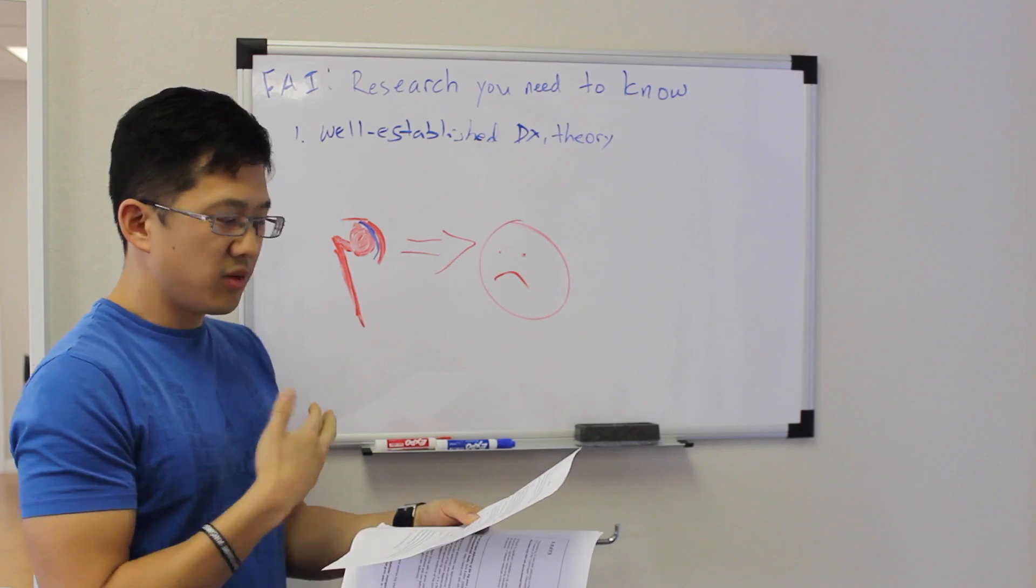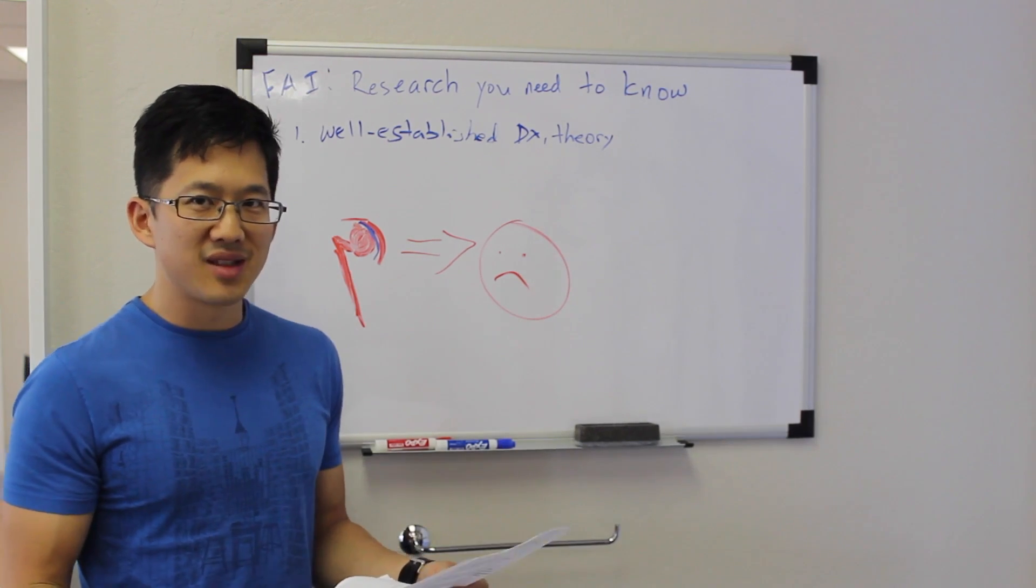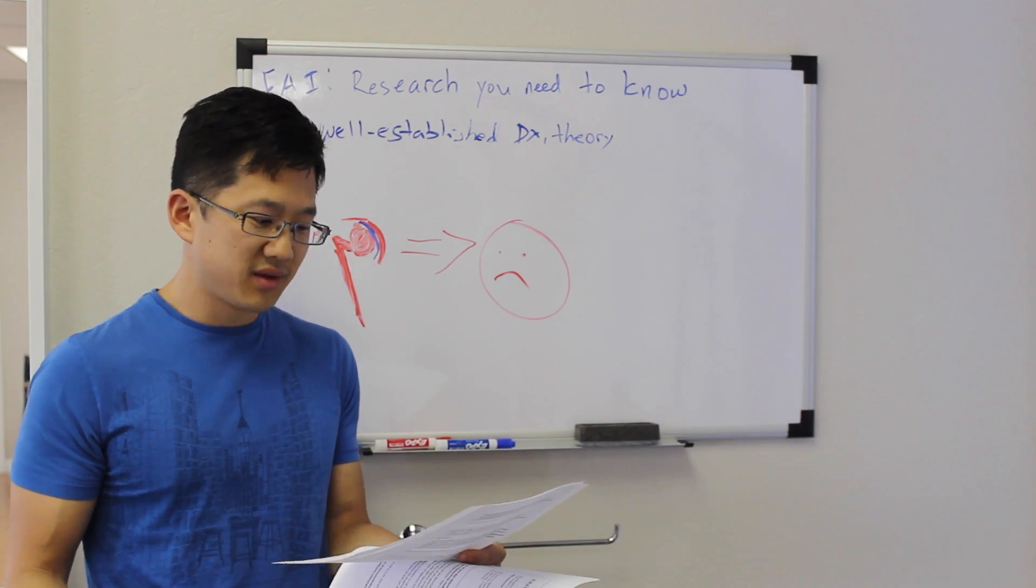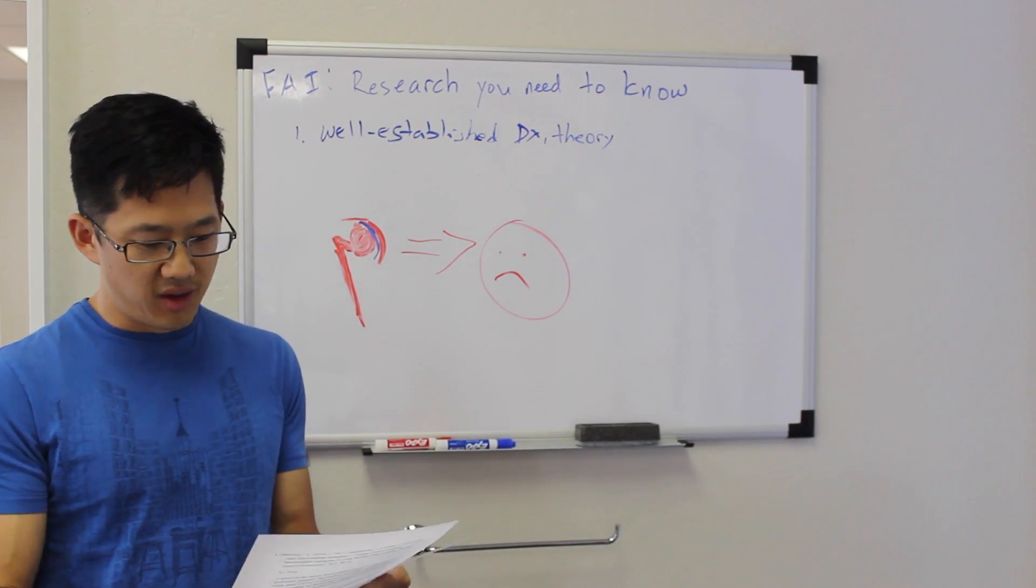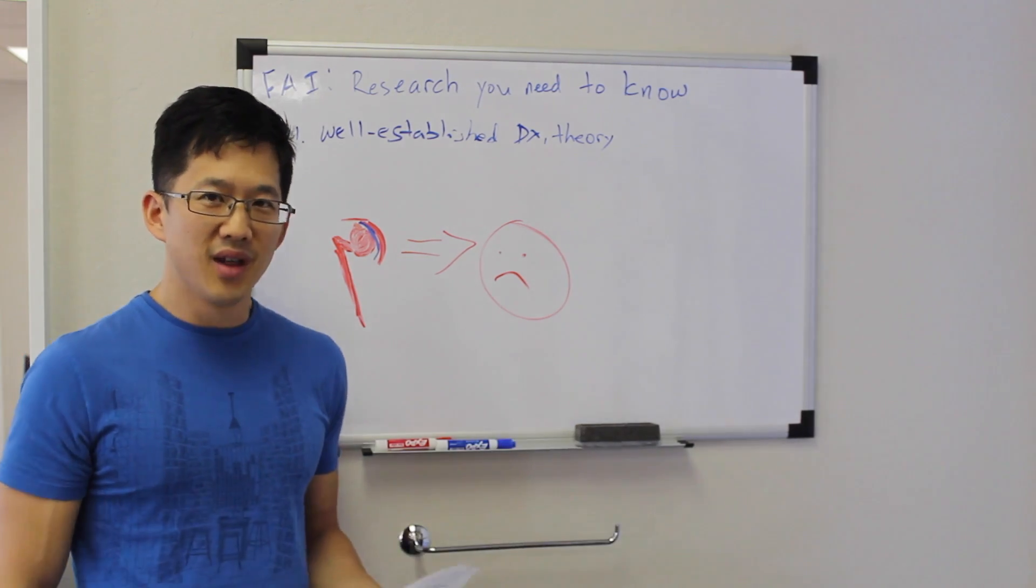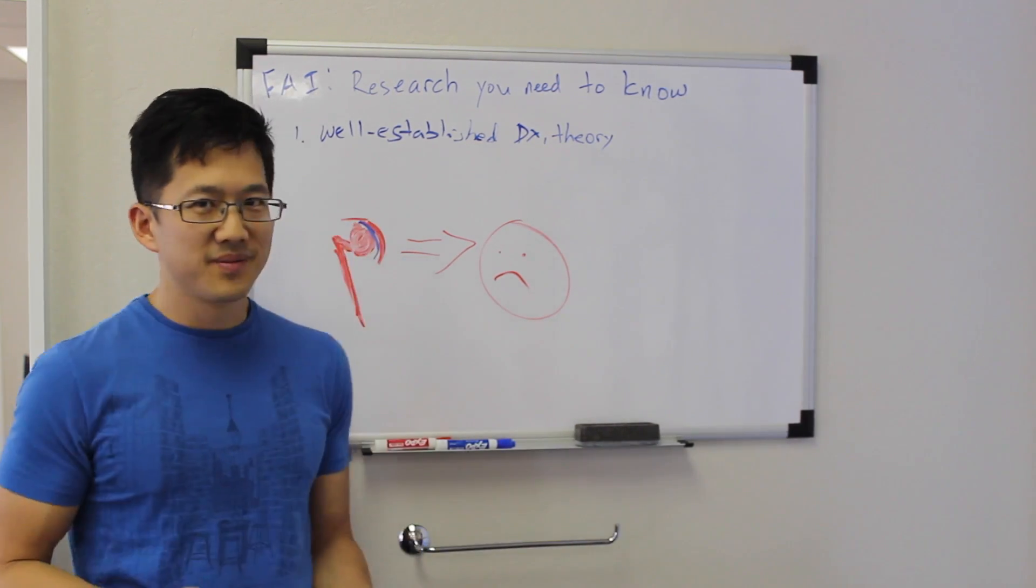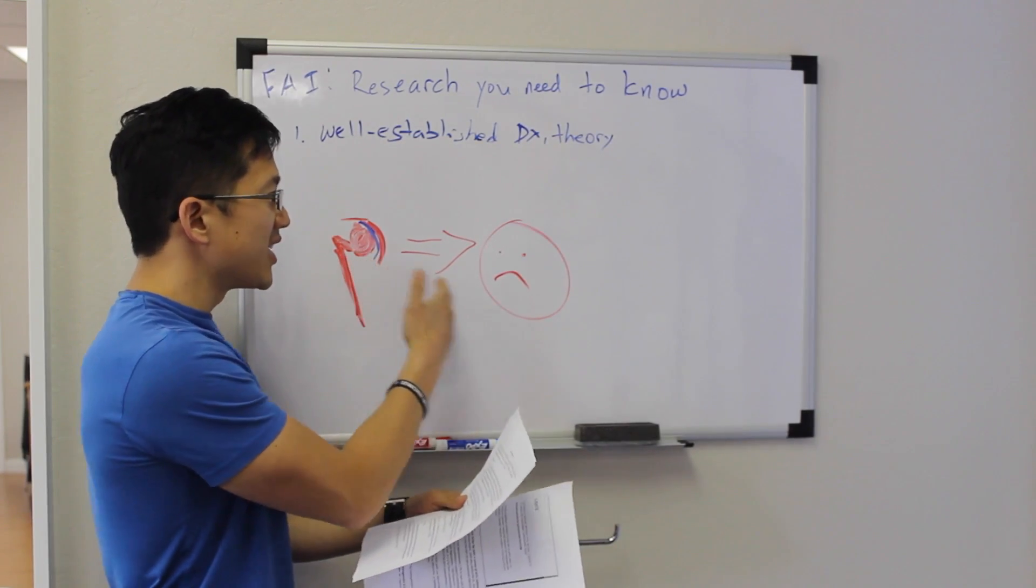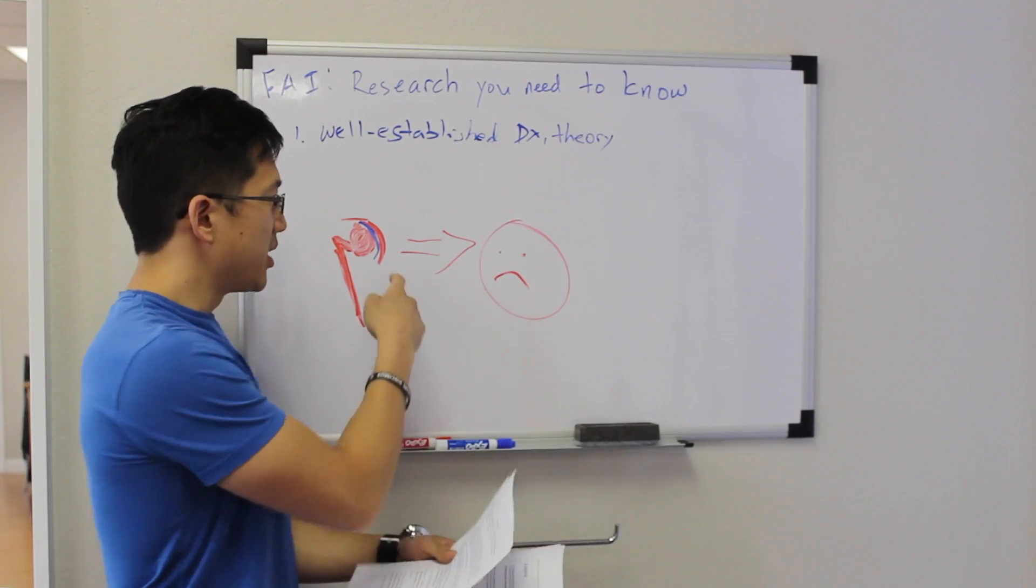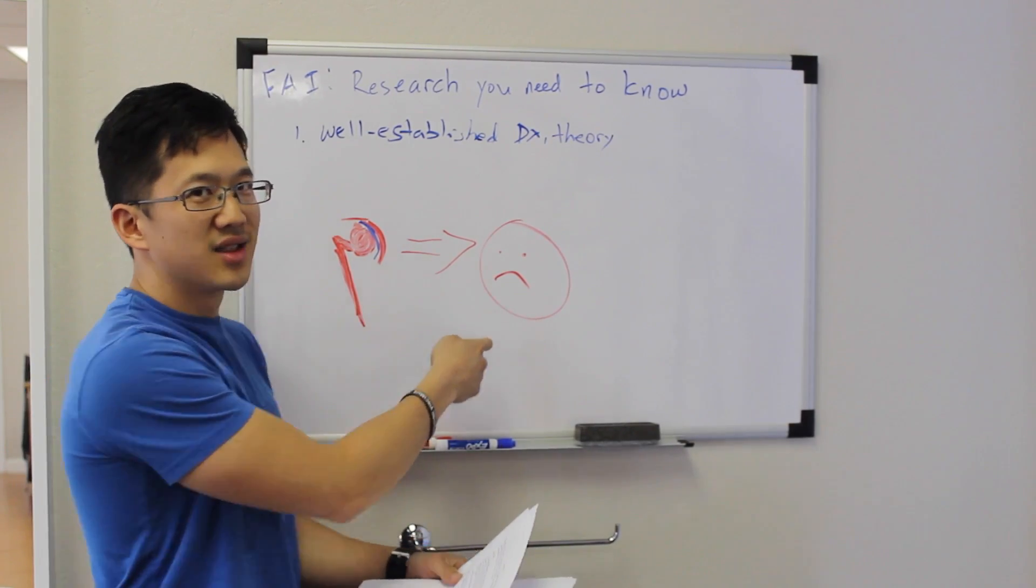So in this study that they did in 2011, they said you could find this, you could find impingement in the x-ray without the hip impingement test, that movement test, being positive. So then one of their conclusions is that the anterior hip impingement test may not be specific for femoral acetabular impingement. This and this are not actually related. They may co-exist, but this doesn't seem to actually cause that.